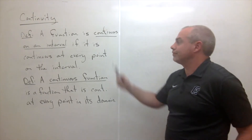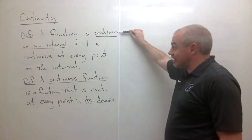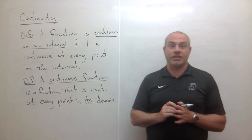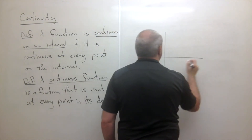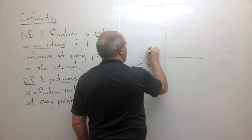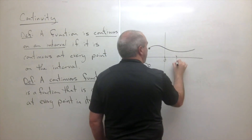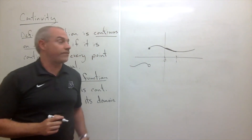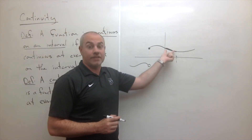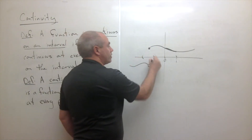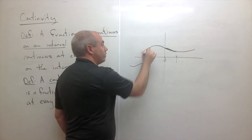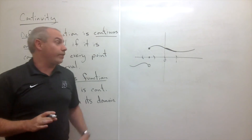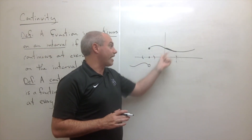Two more quick definitions. First, a function is continuous on an interval if it's continuous at every point on that interval. For example, is a function continuous on the interval from zero to one? Maybe the function does something and jumps outside that interval, but from zero to one it's a nice continuous function — all points are continuous, so we'd say it's continuous on that interval. If we asked about a wider interval containing a jump, it would not be continuous there.